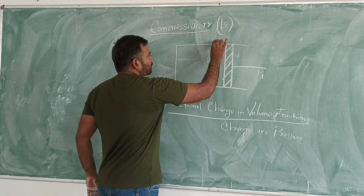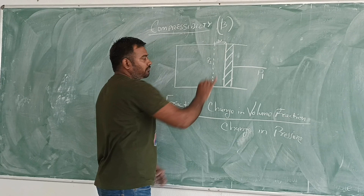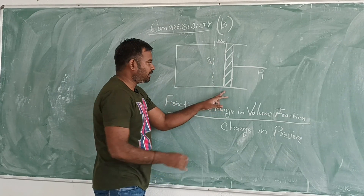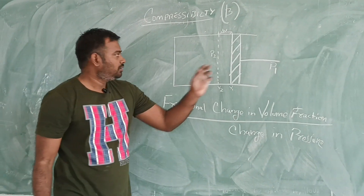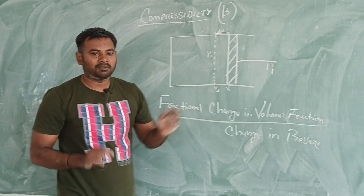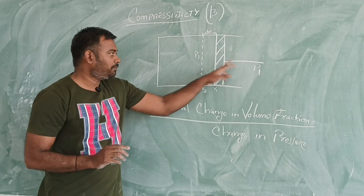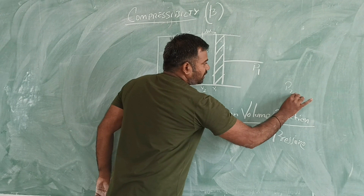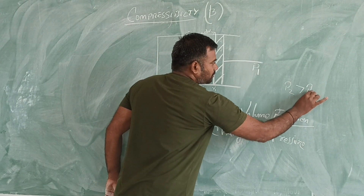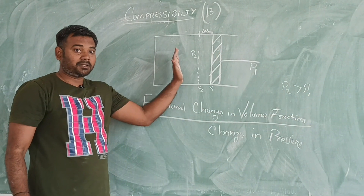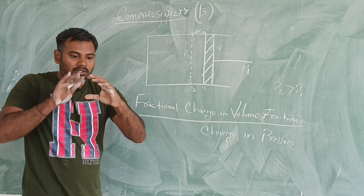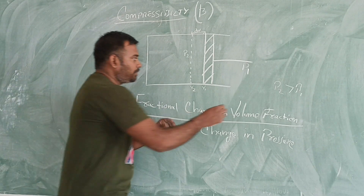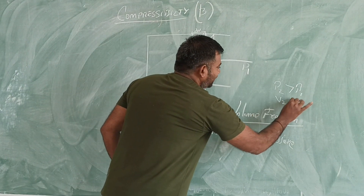Now consider the volume inside the cylinder. There is a change in volume — we call it change in volume — represented by V1 and V2. When we push the piston, pressure increases, so P2 is greater than P1. As pressure increases, volume decreases, meaning V2 will be less than V1.